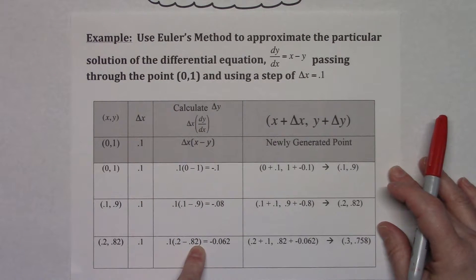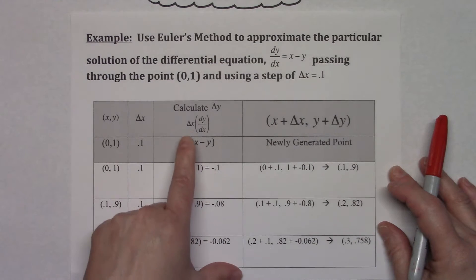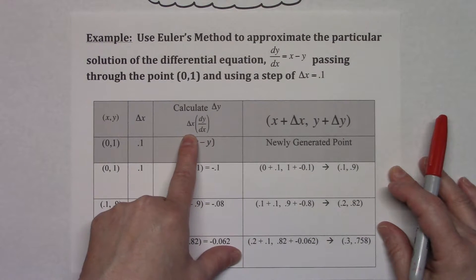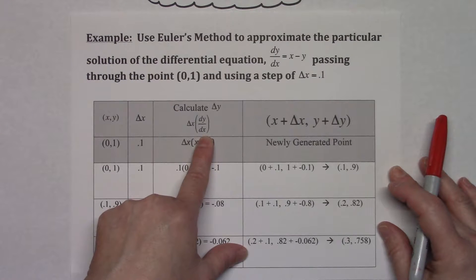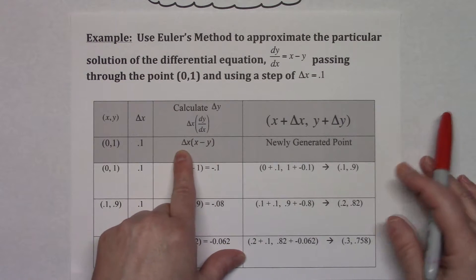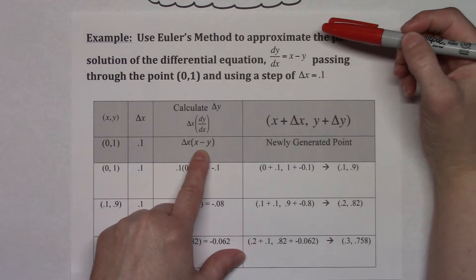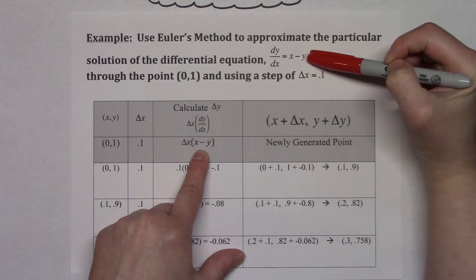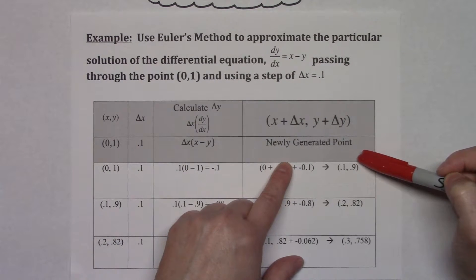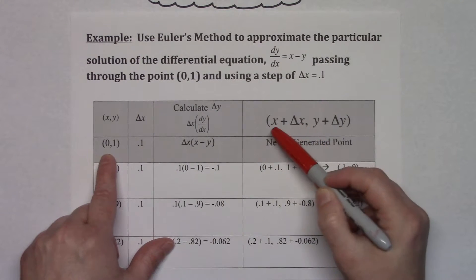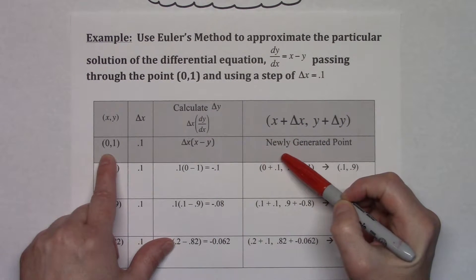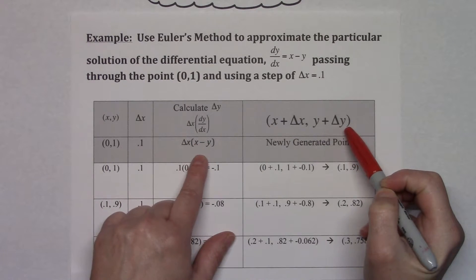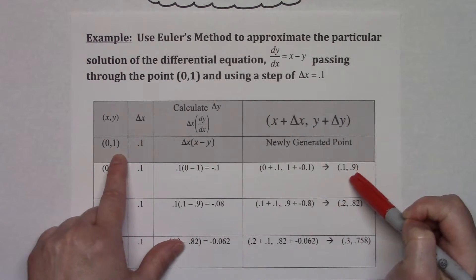Then I have a column where I'm calculating my change in y, or delta y. Euler's method says that we need to take delta x times dy/dx. In this one, it'll be delta x times dy/dx, which in our case is x minus y. Over here is where my newly generated point will be — whatever my delta x is, I will add it to my x value of the previous point, and whatever my delta y turns out to be, I will add it to the y value, and that will give me my new y value.